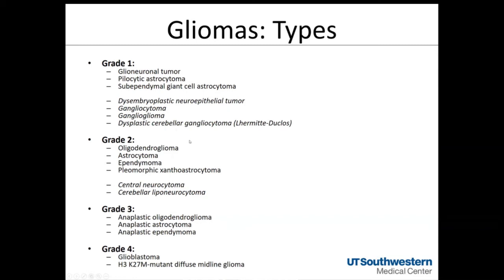Grade II gliomas — the most common are oligodendrogliomas and astrocytomas in middle-aged and younger patients. Ependymomas have both a grade II and grade III phenotype, making them another common grade II glioma in adults, along with pleomorphic xanthoastrocytomas (PXAs). Central neurocytomas are the classic avidly enhancing lesion arising off the septum of the lateral ventricles; while not a glioma, they may be in the differential for intraventricular tumors. Cerebellar liponeurocytomas are a rare, predominantly neuronal-based cerebellar tumor.